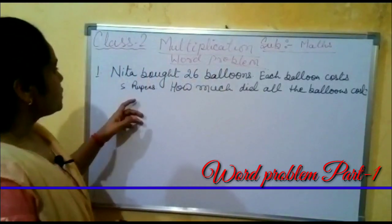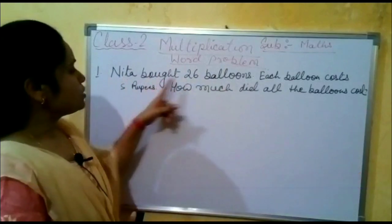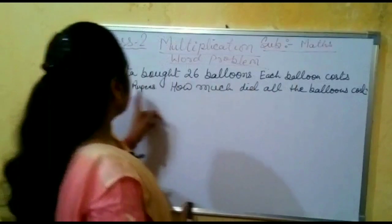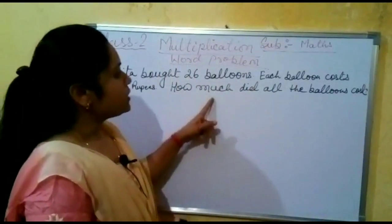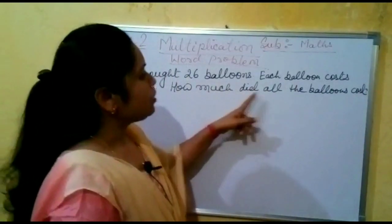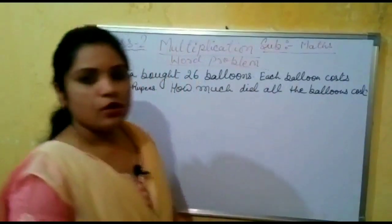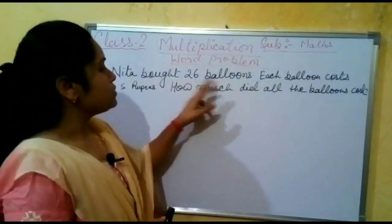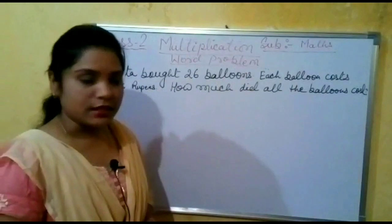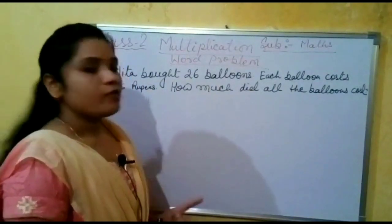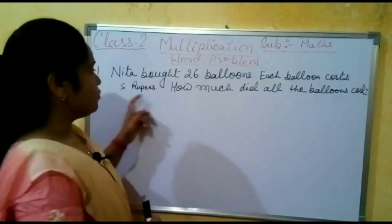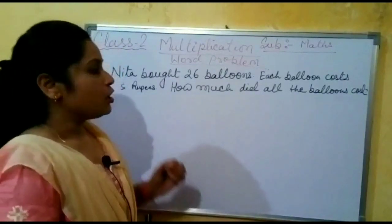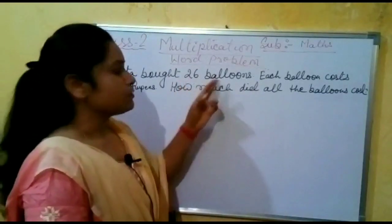What is our first question? Nita bought 26 balloons. Each balloon costs 5 rupees. How much did all the balloons cost? It means 26 balloons are bought by Nita and the cost of one balloon is 5 rupees. So we have to find the cost of all 26 balloons.